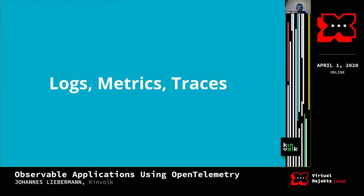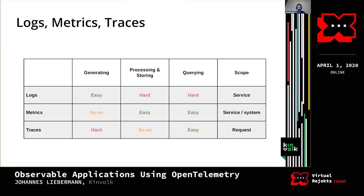Logs, metrics, and traces — and from now on when I say traces I mean distributed tracing. All three have trade-offs. Logs are easy to generate but hard to deal with later. Metrics are harder to generate initially, but once you have them they're easy to store and operate on. Traces are hard to generate, okayish to process and store, but easy to query.